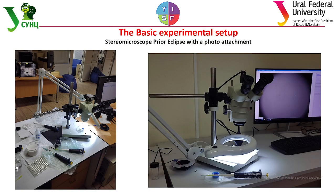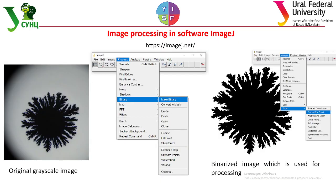Studying of drop spreading was carried out on an experimental setup: a stereo microscope with a photo attachment. Recording speed is 35 frames per second. To extract the necessary information from frames, we used ImageJ software, which is freely available. It enables us to binarize our images, find the size of drops, and calculate the fractal dimension.